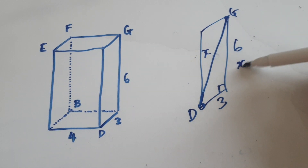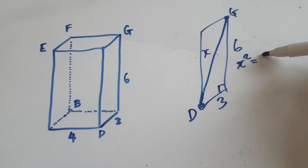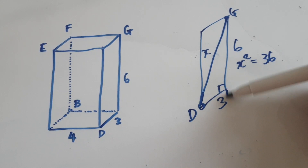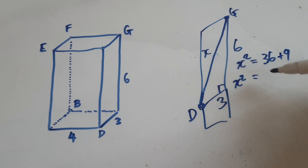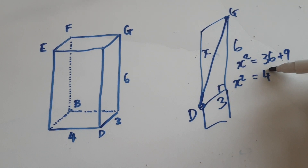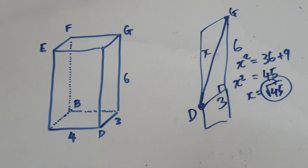So x squared equals 6 squared which is 36, plus 3 squared which is 9. So x squared equals 45. So x equals root 45. So DG is root 45.